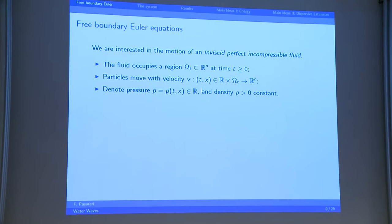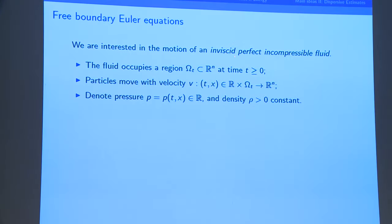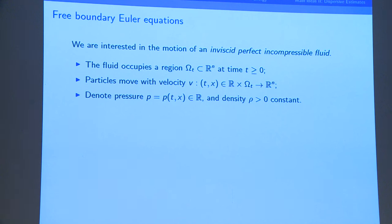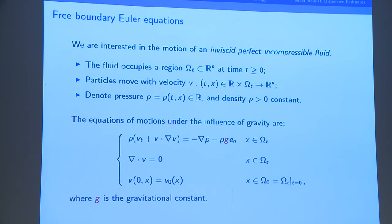So what is the model? We're interested in a fluid that is inviscid — no viscosity — and incompressible. The fluid will occupy a region that changes with time, which I call omega_t over R^n, where n will be 2 or 3. I call v, a function of space and time, the velocity, defined for x in omega_t. p is the pressure, and rho is the density, which is constant in this more basic model.